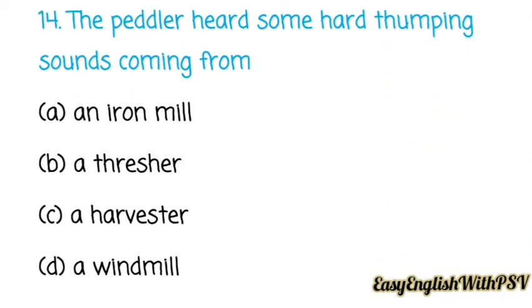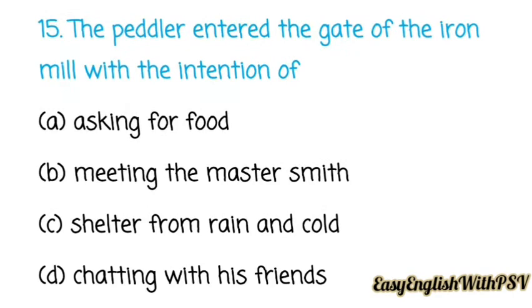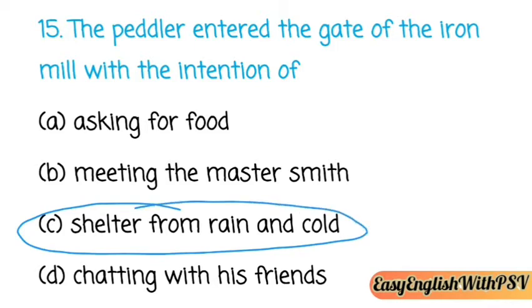Question number fourteen: The peddler heard a hard thumping sound coming from an iron mill. Question number fifteen: The peddler entered the gate of the iron mill with the intention of — asking for food, meeting the master smith, shelter from rain and cold, or chatting with friends? The correct answer is: shelter from rain and cold.